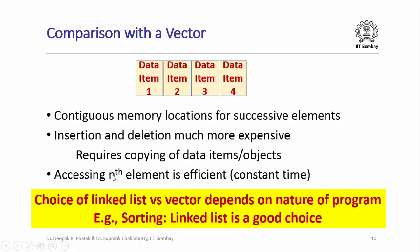However, accessing the nth element is extremely efficient in a vector — it is constant time because all data items are allocated contiguous memory locations. Once you know the address of the first data item, you can calculate the address of the nth data item and access it directly. So accessing the nth element is efficient in a vector, unlike in a doubly linked list where it is quite time consuming. The choice of whether to use a linked list or a vector really depends on the nature of your program.